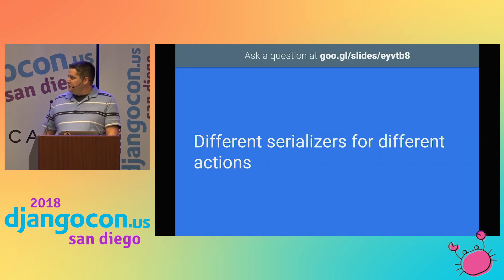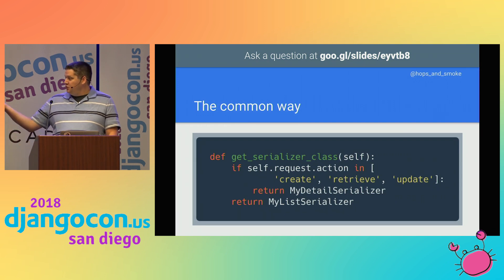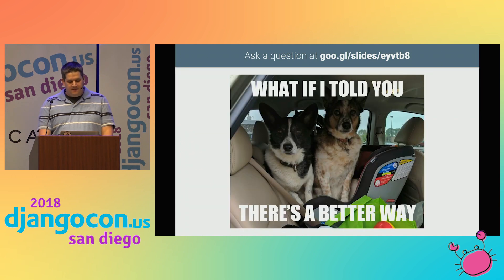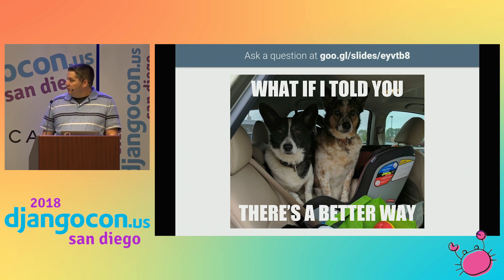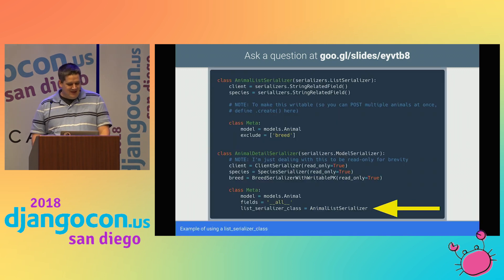Next, we'll talk about using different serializers for different actions. You've probably seen the pattern where get_serializer_class looks at the action of the request — if it's a detail route, return the detail serializer, otherwise return the list serializer. But what if I told you DRF provides a way to differentiate between list and serializer classes with one line of code? DRF provides a very handy list_serializer_class attribute in the Meta class.